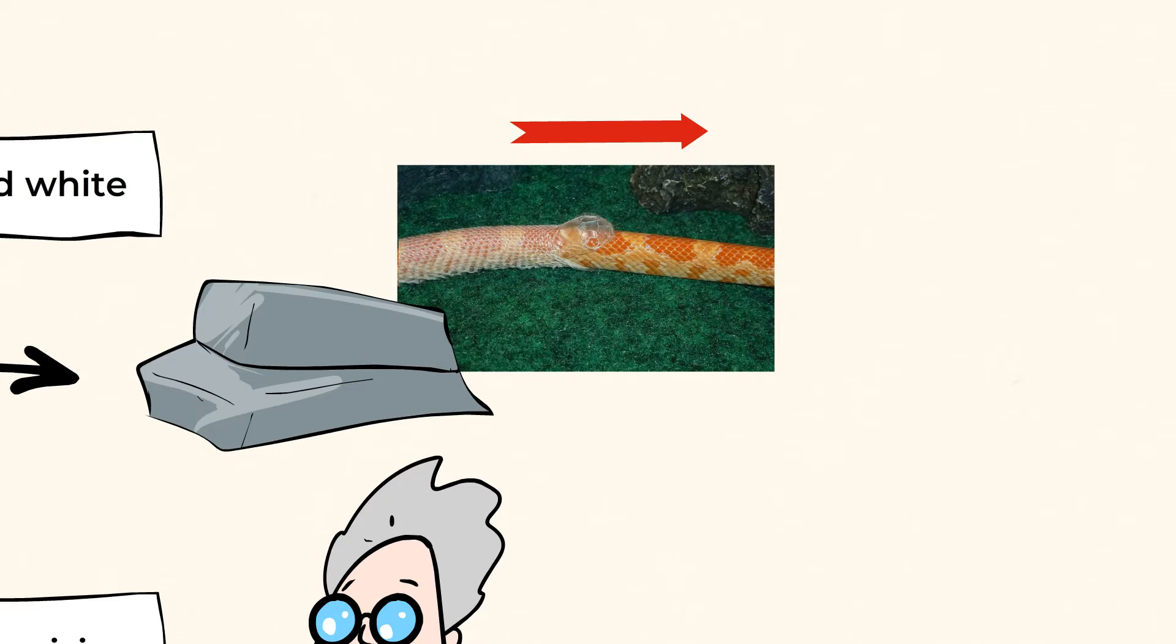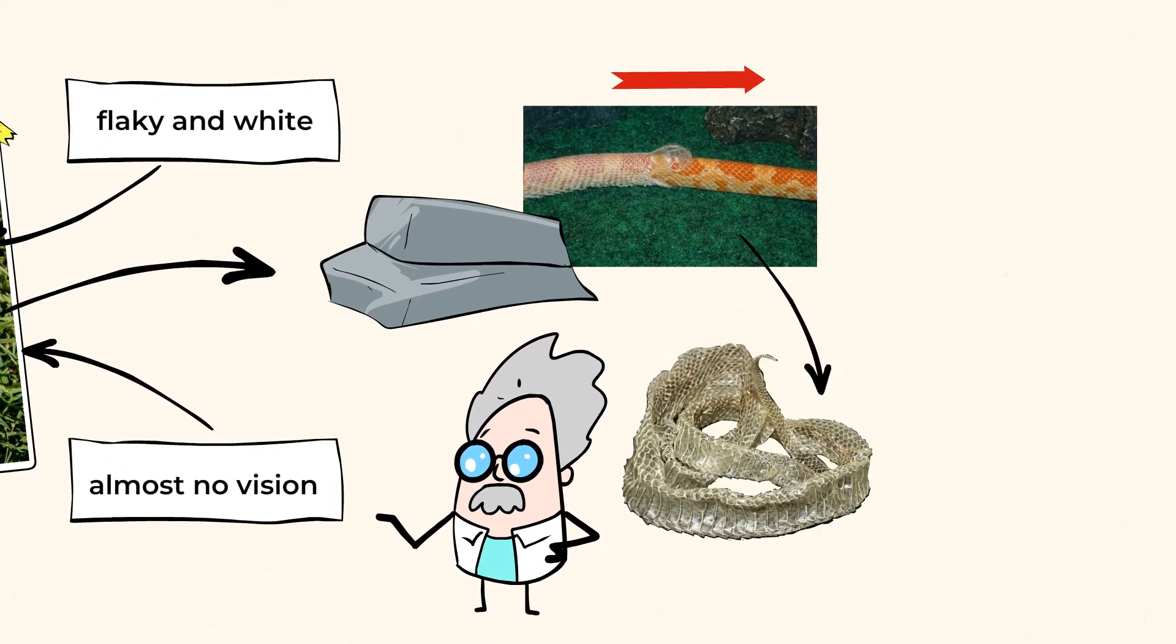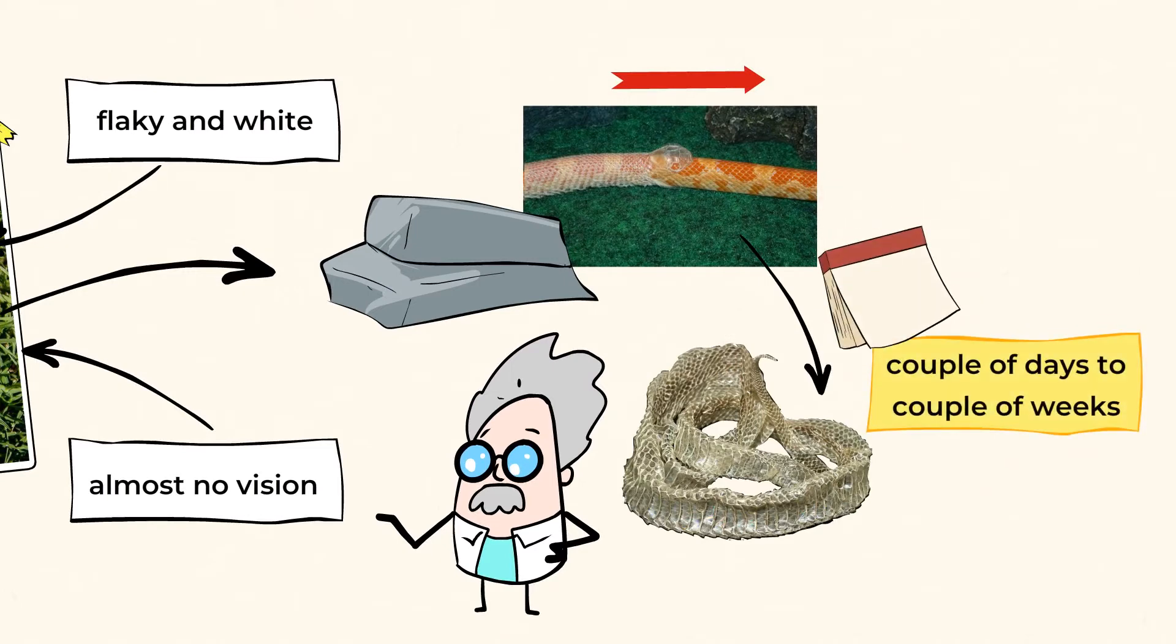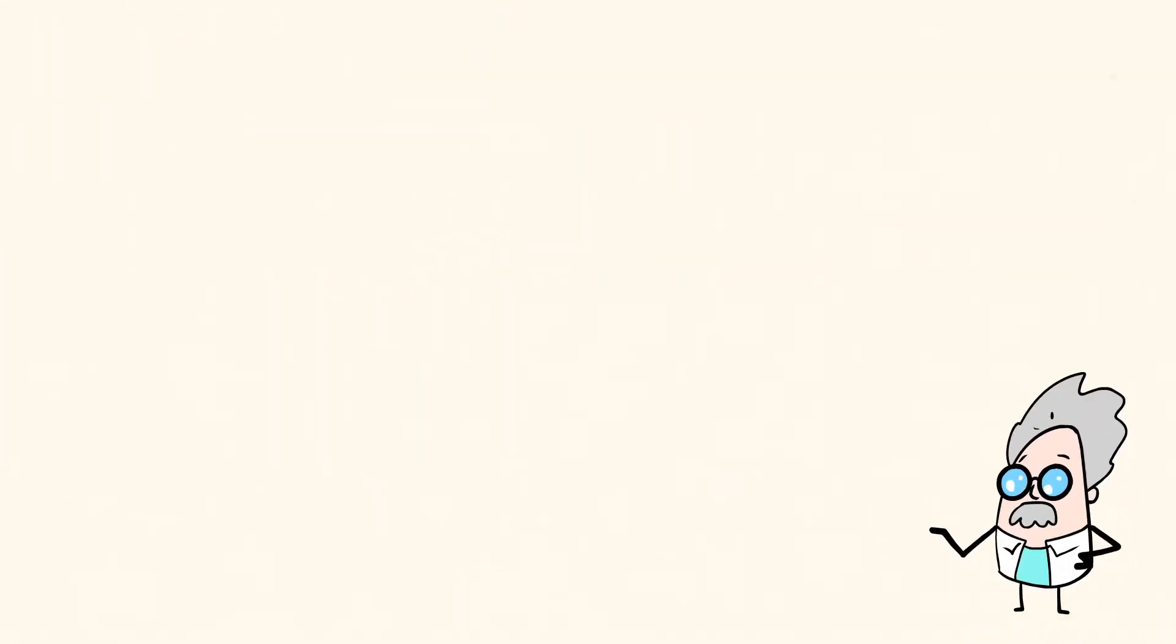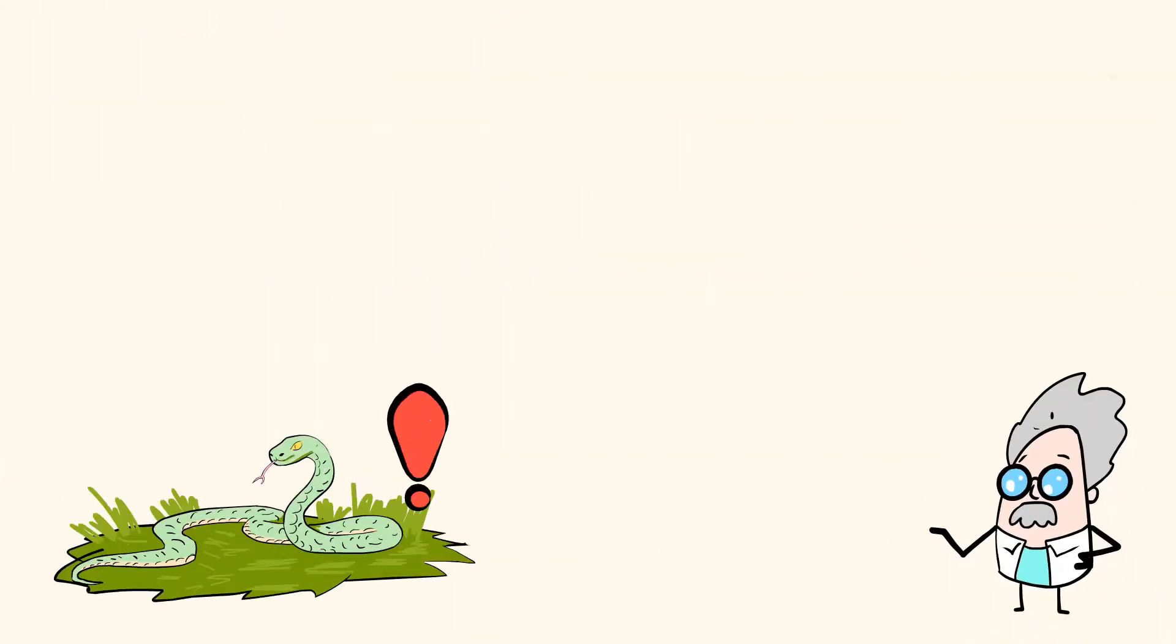And once the tear is big enough, then the snake will start crawling through tight spaces to help them slide out of their skin. And they leave the old skin inside out, like you know how you take off your socks? And this whole skin shedding takes anywhere from a couple of days all the way to a couple of weeks, depending on how big the snake is. It's really important that a snake remains undisturbed during this process. Otherwise, the story may not have such a happy ending.